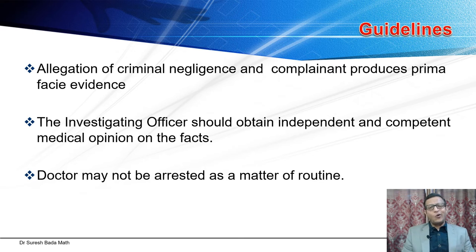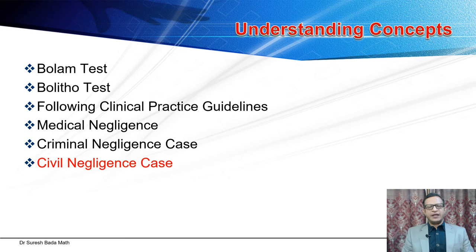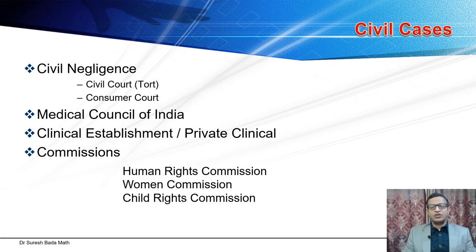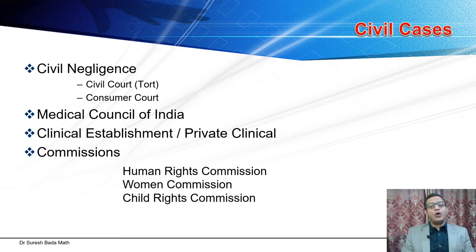Moving to civil negligence — there are different avenues available. The patient can go to civil court or consumer court. Nowadays the consumer court is very fast. Many patients approach the consumer court. If no monetary compensation is sought, they may go to the Medical Council of India — first to the state council and then on appeal to the central council. There are also clinical establishment acts in some states, as well as the human rights commission, women's commission, and child rights commission.